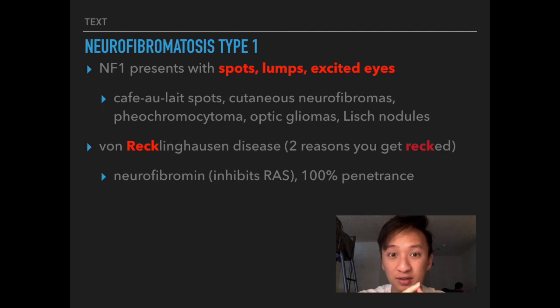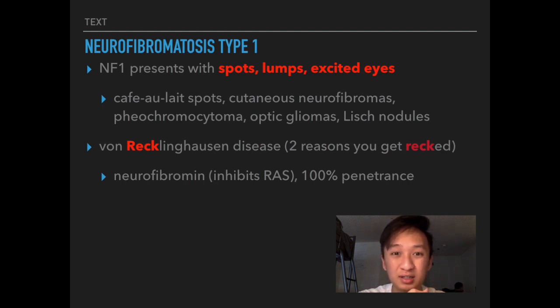'Spots' represents café-au-lait spots. 'Lumps' represents cutaneous neurofibromas, which are lumps on the skin that feel kind of rubbery due to the myelin in the neoplastic tissue.